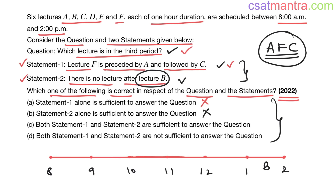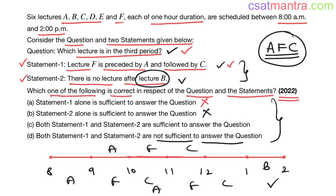Now combining both statements: Statement 1 allows A-F-C to be placed in multiple positions, and even with B fixed as last, we still get multiple possible arrangements for the third period — no single certain answer emerges. Both statements together are not sufficient to answer the question. So the answer is D.